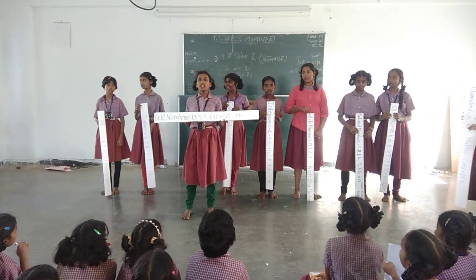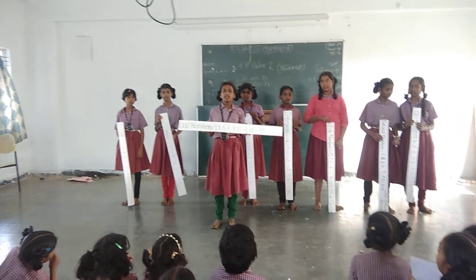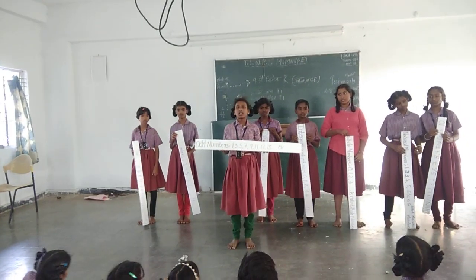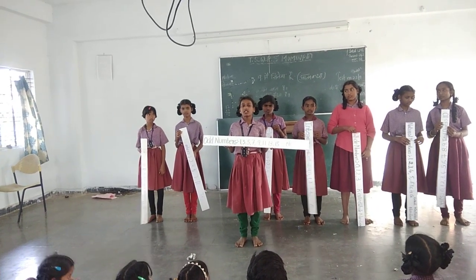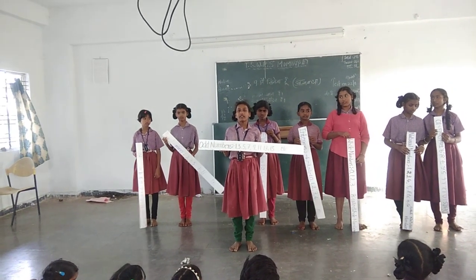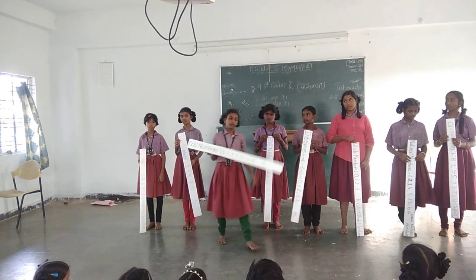Odd numbers — the numbers which are not divisible by two are called odd numbers. Examples: 1, 3, 5, 7, 9, etc.